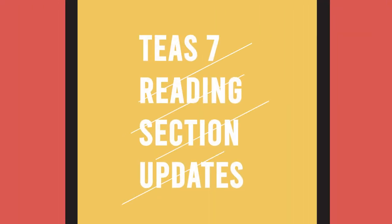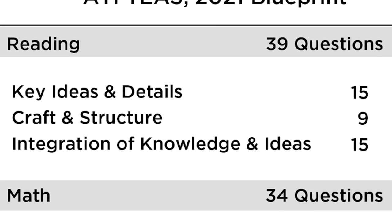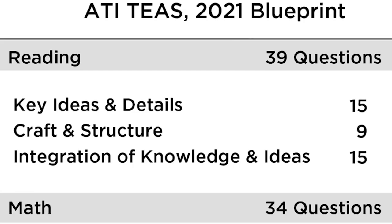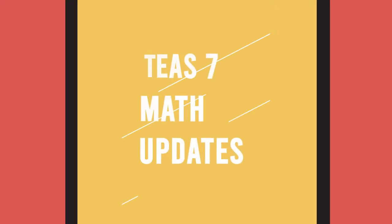For reading, the key takeaways are that there will be fewer Key Ideas and Details questions and fewer Craft and Structure questions, with a little more Integration of Knowledge and Ideas. Specifically: Key Ideas and Details drops from 22 to 15 questions; Craft and Structure drops from 14 to 9 questions; and Integration of Knowledge and Ideas increases from 11 to 15 questions.